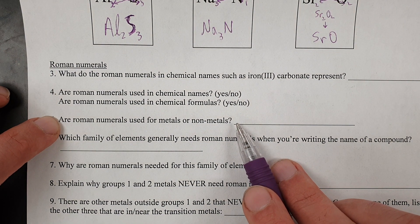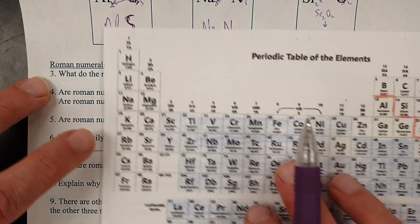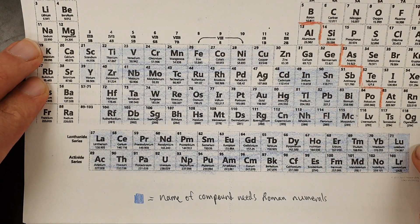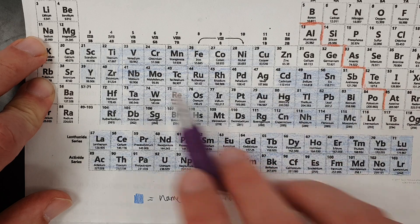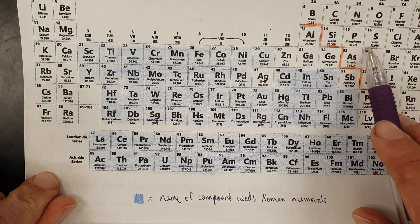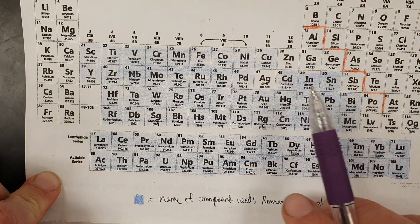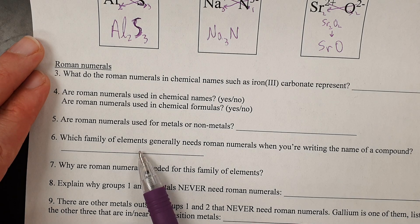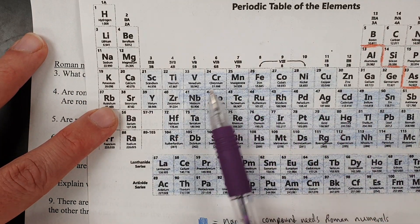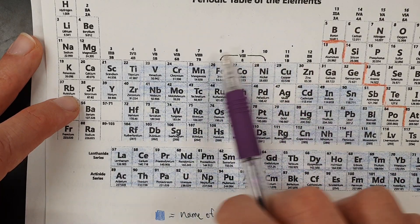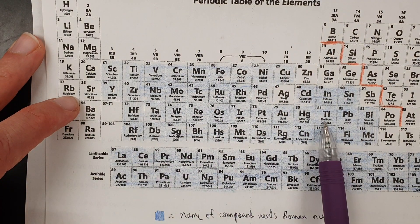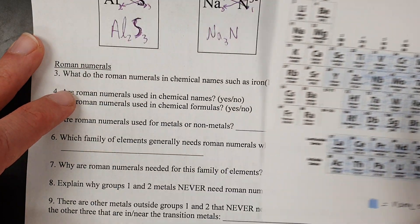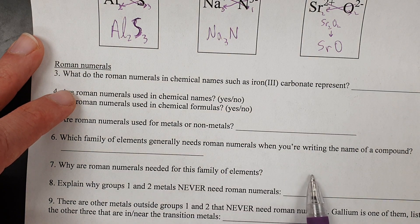Are Roman numerals used for metals or non-metals? The answer is metals only. More specifically, these metals that are colored here are what Roman numerals are used for. So outside of these, never use a Roman numeral for a non-metal. There are also certain metals you don't use a Roman numeral for. The family of elements that generally needs a Roman numeral is most of the transition metals. Any compound containing a transition metal needs a Roman numeral to specify the charge of the cation. So the answer here is transition metals.